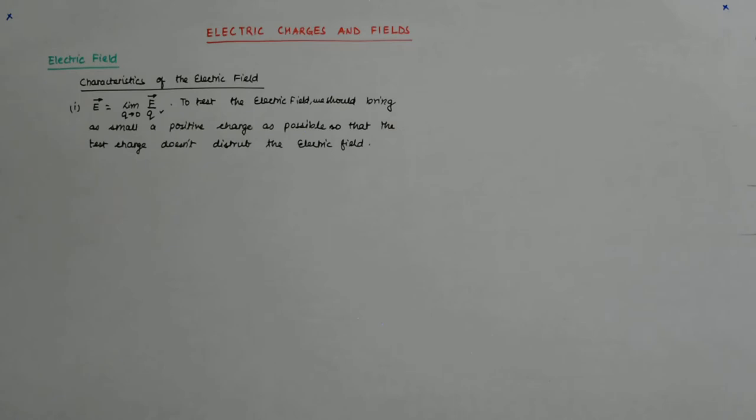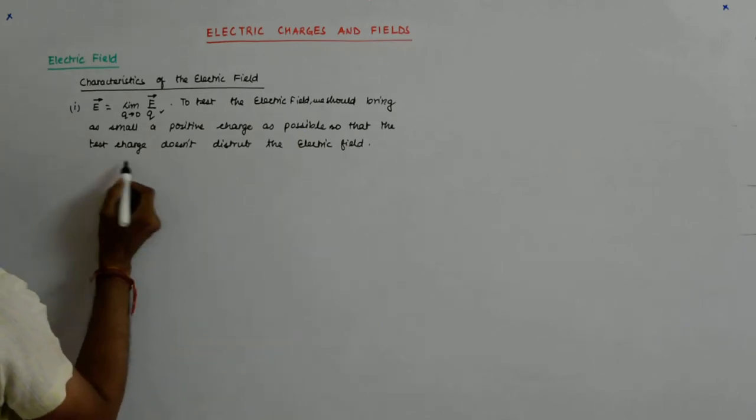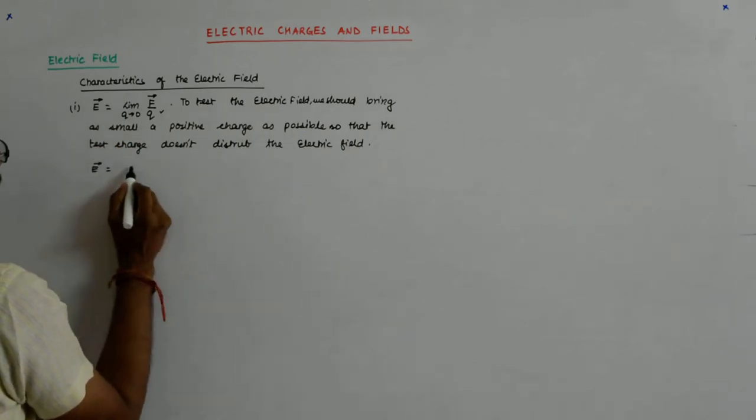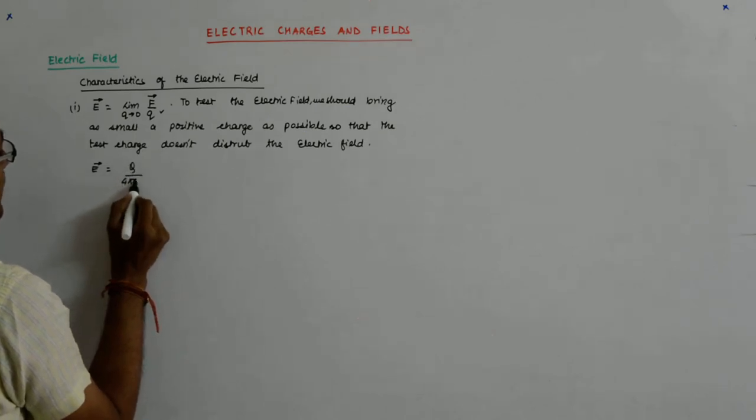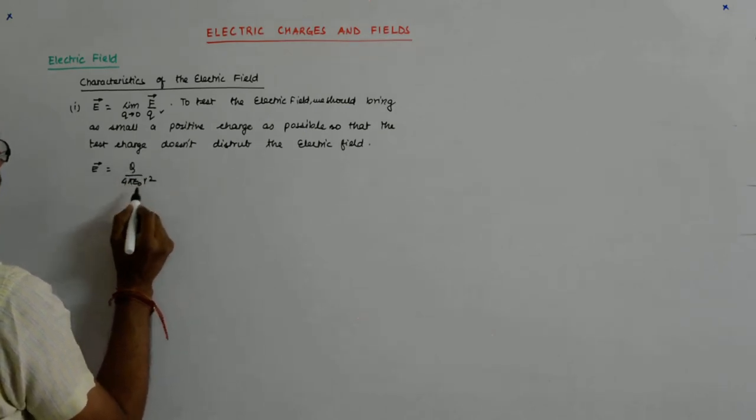Now we know that E came out to be Q upon 4πε₀r².